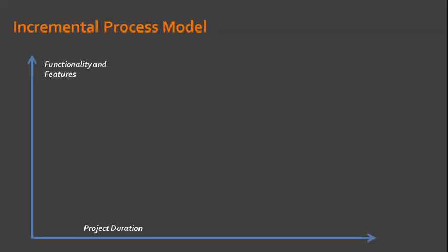The next process model is what we call the incremental process model. The incremental model combines the elements of linear and parallel process flows.